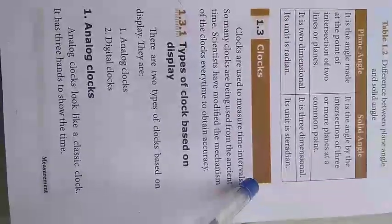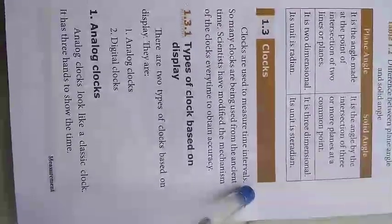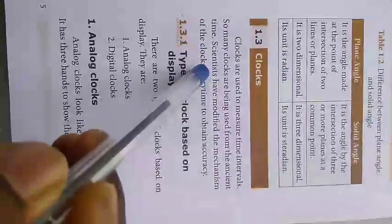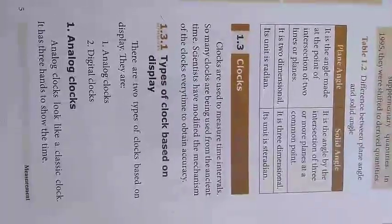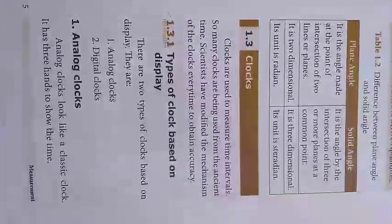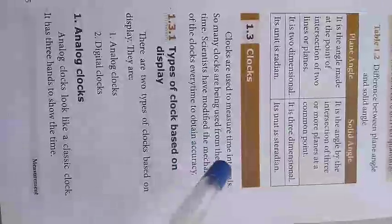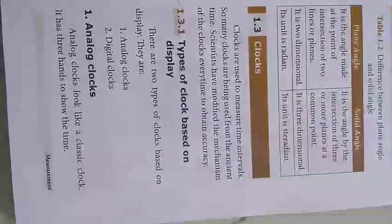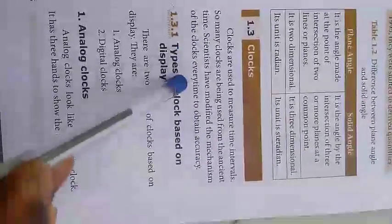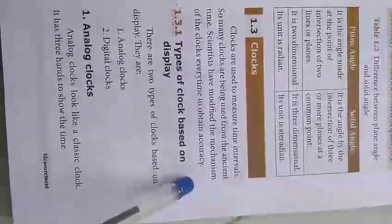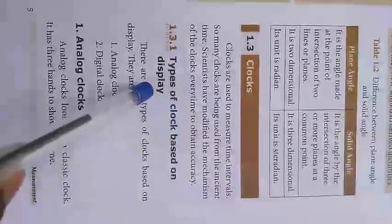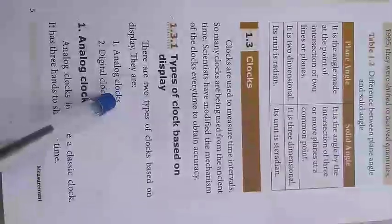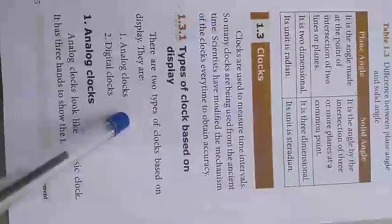Clocks are used to measure time intervals. From ancient times, different types of clocks have been used, and now we use digital clocks. Scientists have modified clock mechanisms over time to obtain accuracy, because without accuracy it is impossible to measure time.